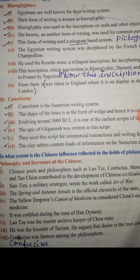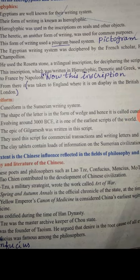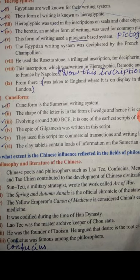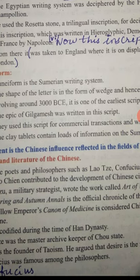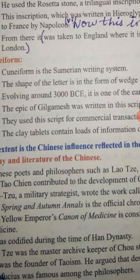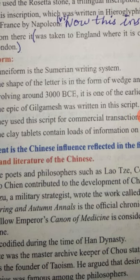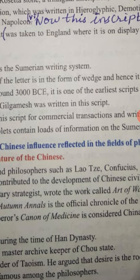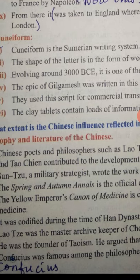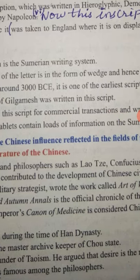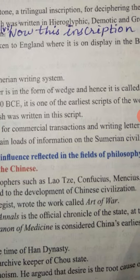Besides hieroglyphics, cuneiform is a Sumerian writing system. The shape of the letter is in the form of a wedge, and hence it is called cuneiform. Evolving around 3000 BCE, it is one of the earliest scripts of the world. The epic of Gilgamesh was written in this script. They used this script for commercial transactions and writing letters and stories. The clay tablets contain loads of information on the Sumerian civilization.